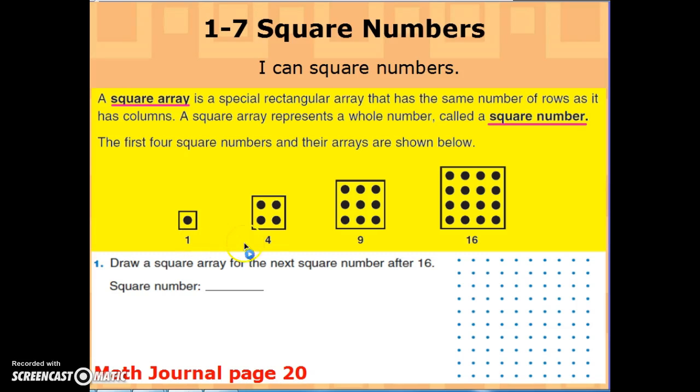For four, you have a two by two array, so two times two is four, and it makes a perfect square—the same number in each row, the same number in each column. It's a square array. For nine we have a three by three array, and for 16 we have a four by four array. So when you have the same number of rows and the same number of columns, you get a square array.